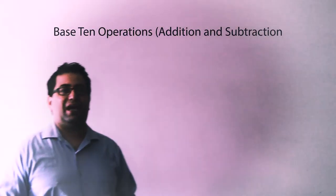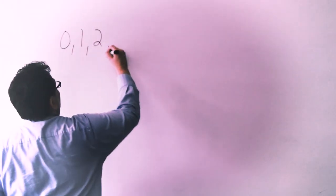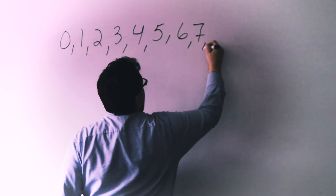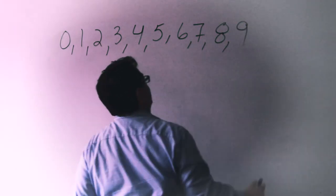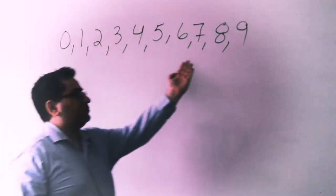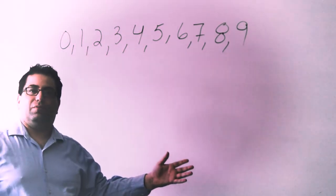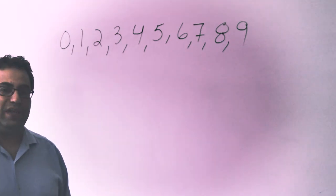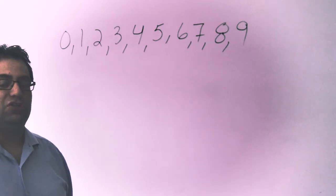Our first topic is base 10 operations. Our number system is considered base 10, and there's a reason why they call it base 10. There are 10 numerals in our number system. With these 10 numerals you can make any number in our number system. Because of this, 10 is a magic number — we can use the power of base 10 operations to do mental math.